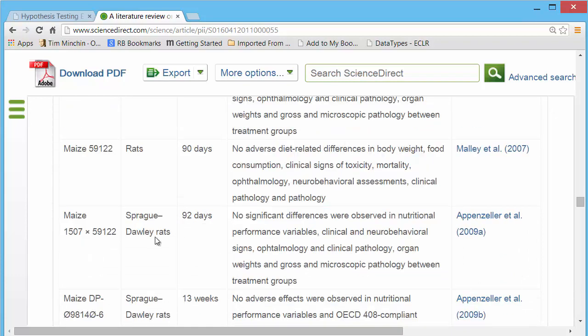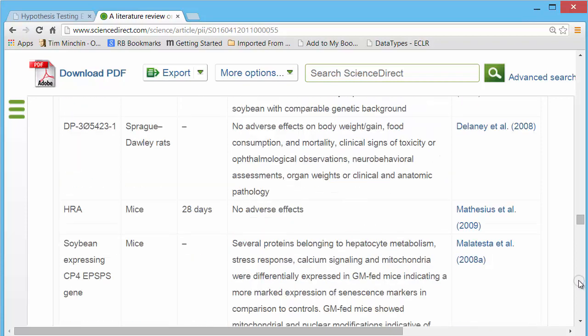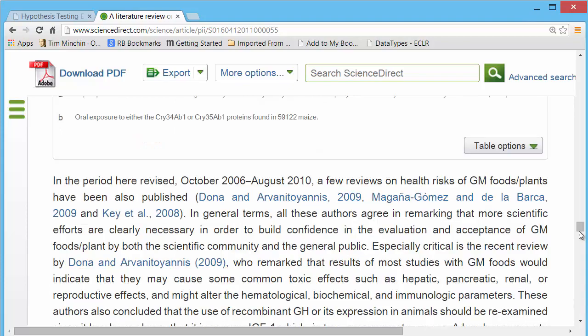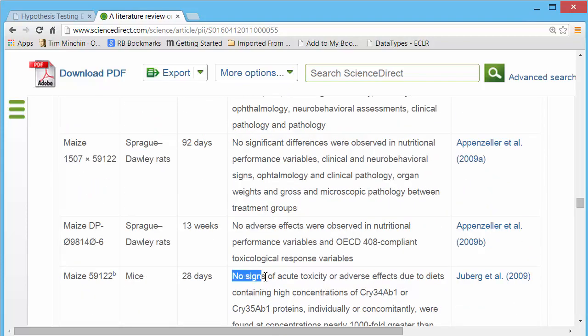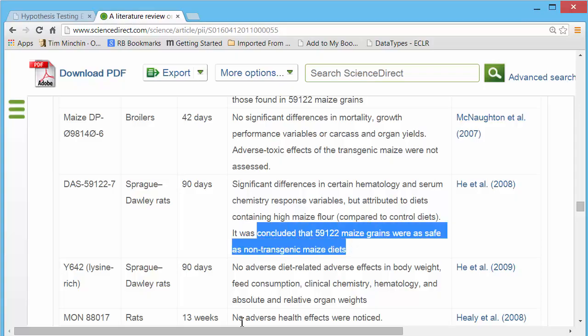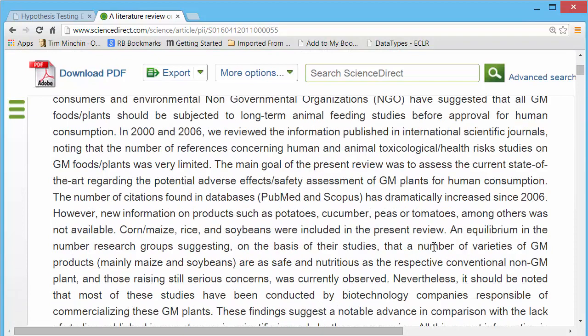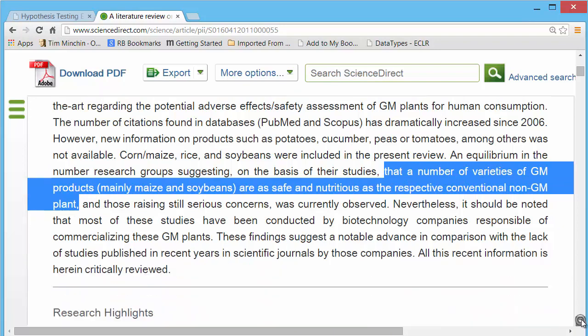I can go down: rats, mice, broilers, chicken. If you scan over the results, you will mostly find no adverse effects, no significant differences. It was concluded that the GM food was safe and so forth.